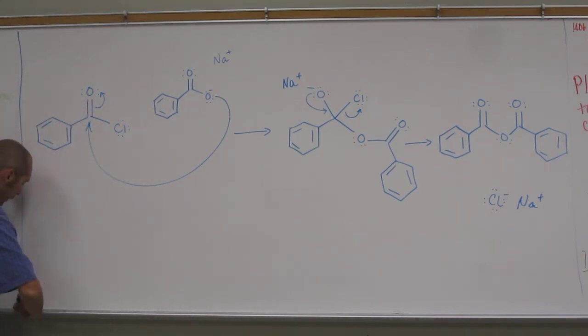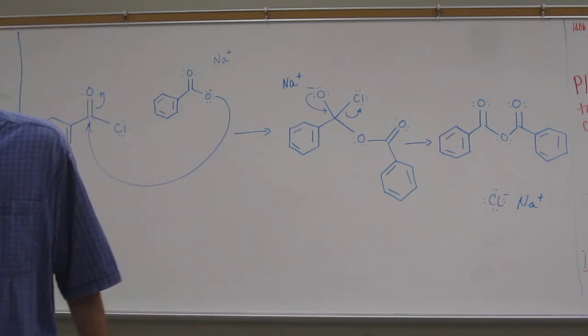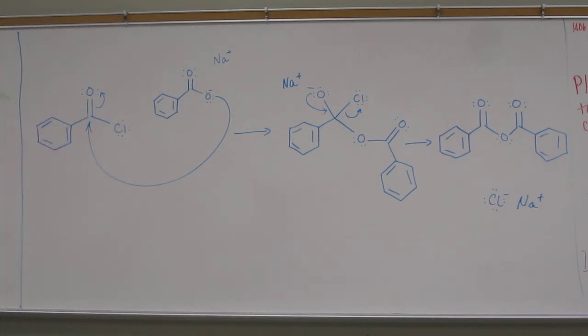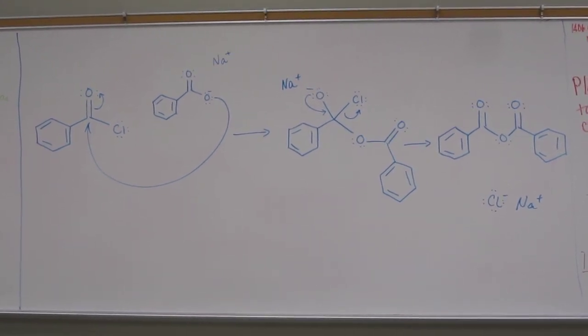So that's how you make an acid anhydride from an acid chloride. That's the mechanism. It's the same mechanism over and over. Is there any questions about this one?